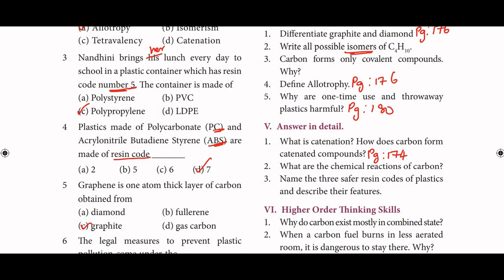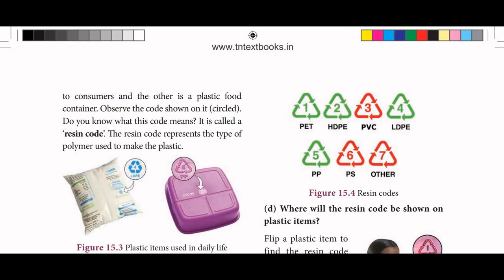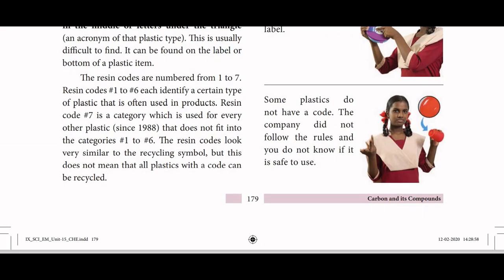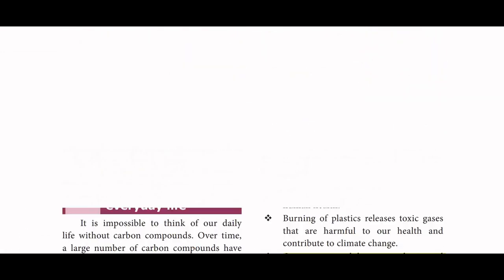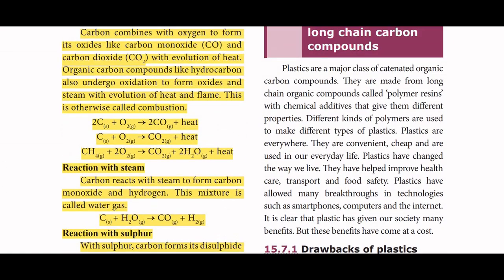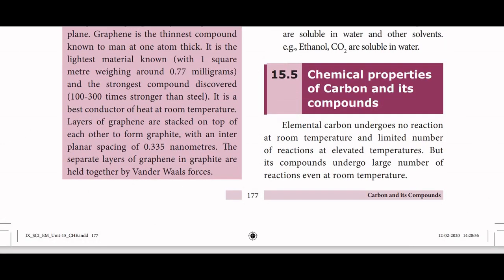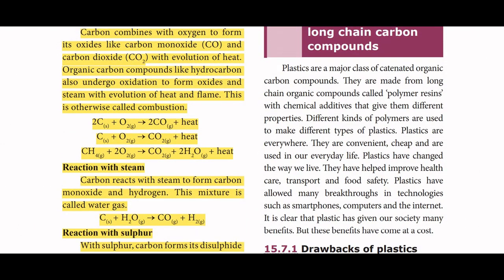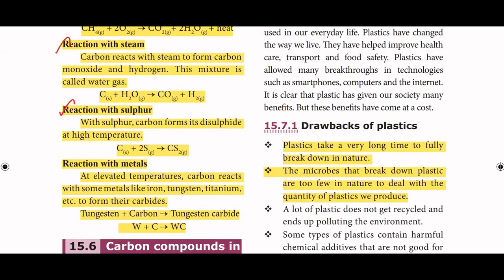What are the chemical reactions of carbon? The answer is on page number 178. The chemical properties of carbon and its compounds include: oxidation, reaction with steel, reaction with sulphur, and reaction with metals.